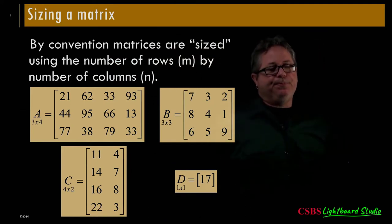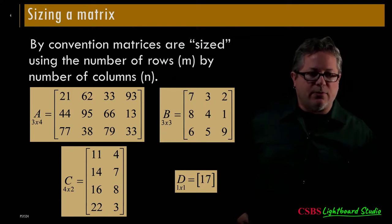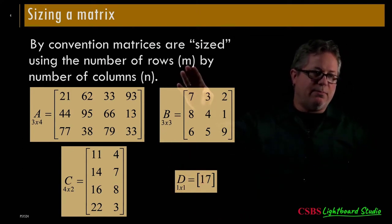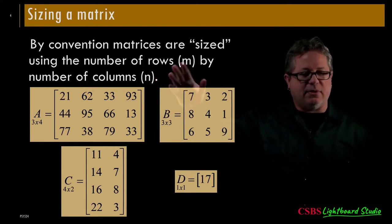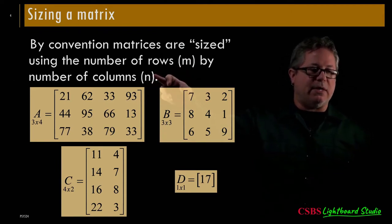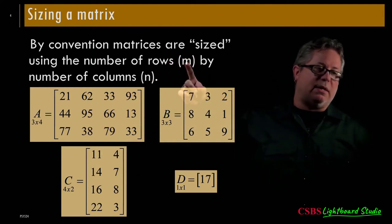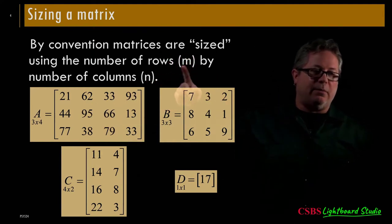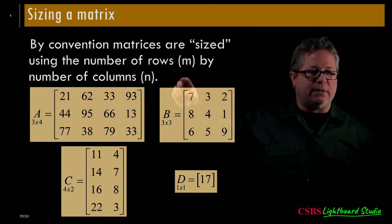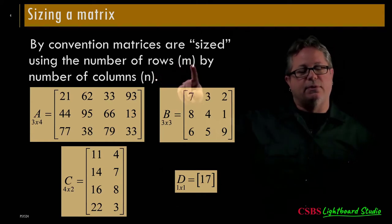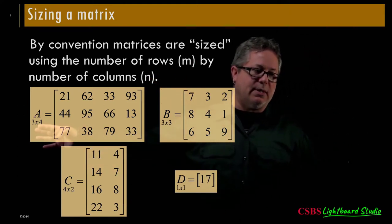By convention, matrices are sized by the number of rows by the number of columns — rows M by columns N. The letters don't really matter; the key idea is that M and N — or A and B, or whatever letters you use — these dimensions don't have to be the same. You can have 5 rows by 10 columns, for example. So here again, that same 3 by 4.